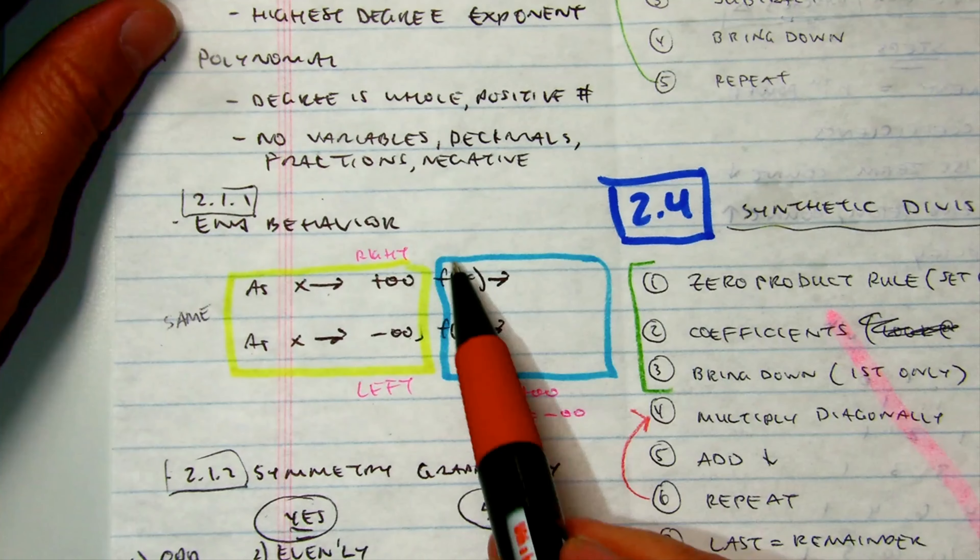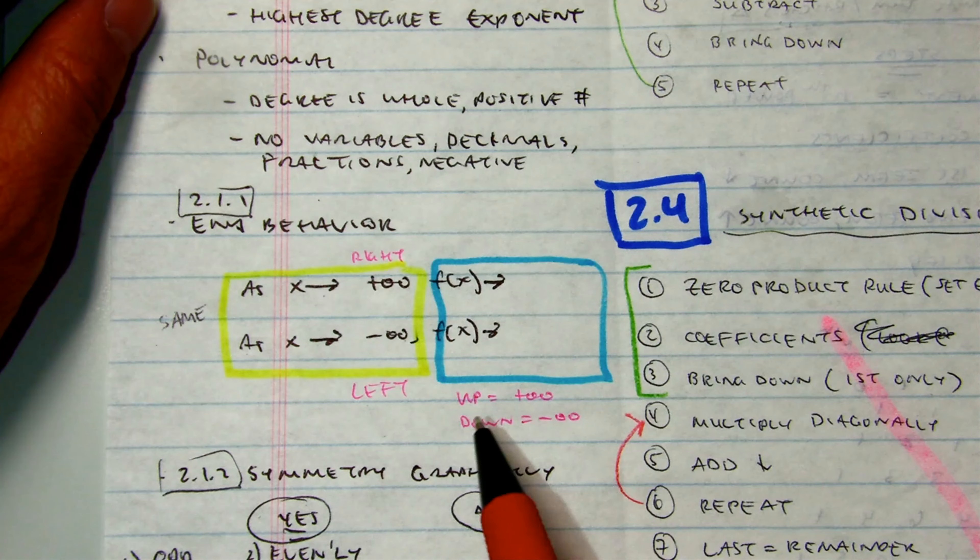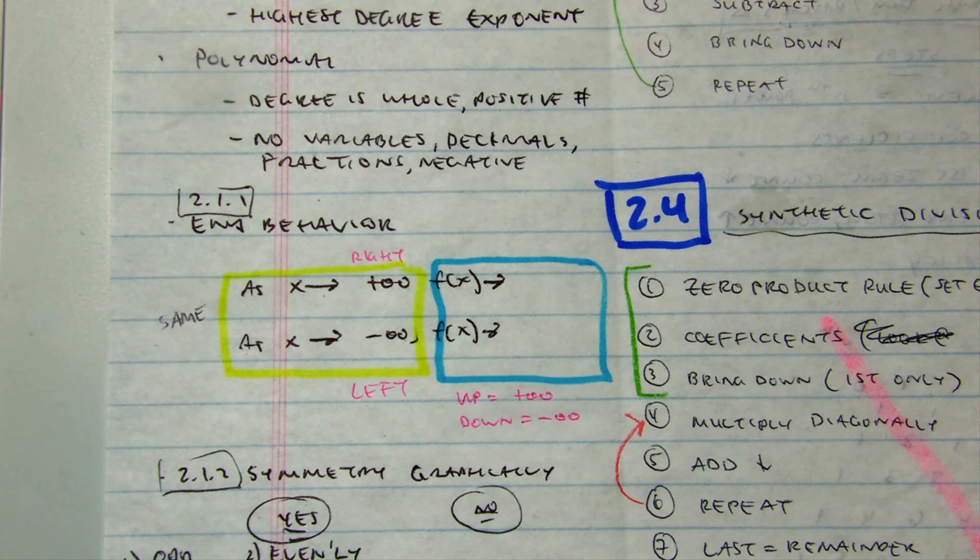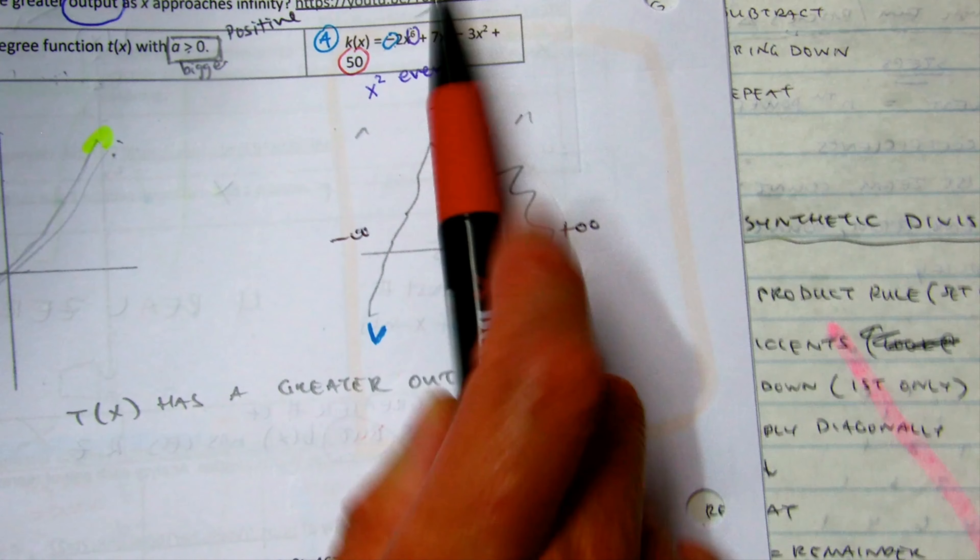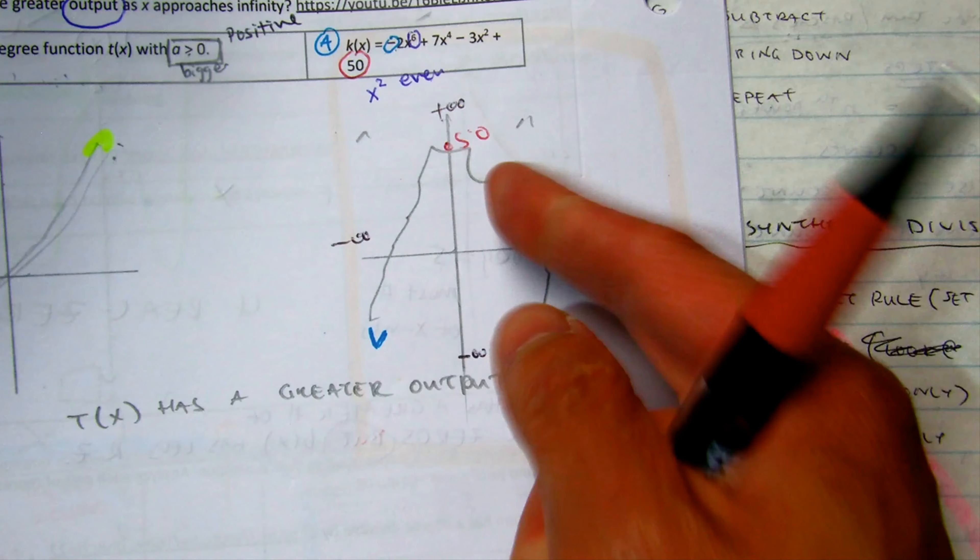Now this blue box will change based on what your graph looks like. If it goes up, you'll write positive infinity, and if it goes down, negative infinity. So this one, as I go towards the right, it is going down. So that would be negative infinity. As I go towards the left, its end behavior is negative infinity.